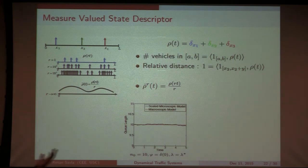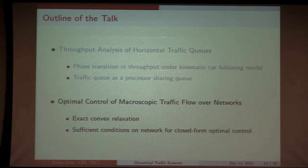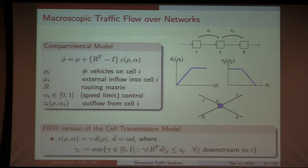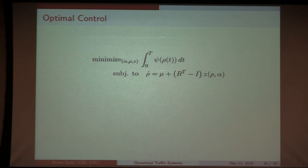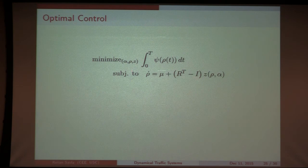In theory, you can go from the car-following model to an appropriate PDE description using the measure-valued state description, and there are ways to incorporate lane-changing behavior as well. In the second part of the talk — for those interested — the macroscopic model is used for optimal control: minimize average travel time subject to the model where the control alpha represents speed limits. This problem is non-convex in general because the constraints on Z are non-convex, and we propose an exact convex relaxation.